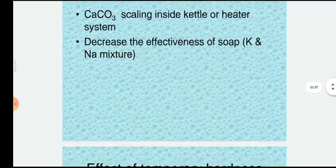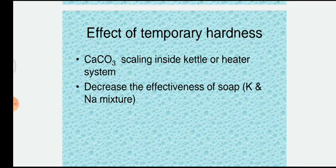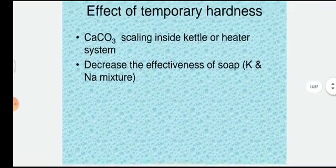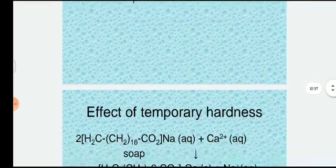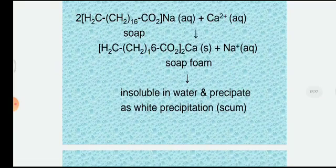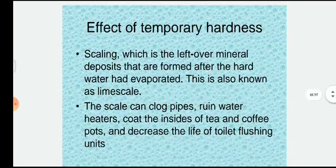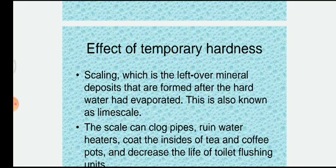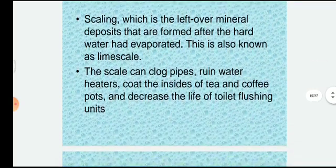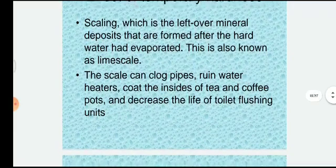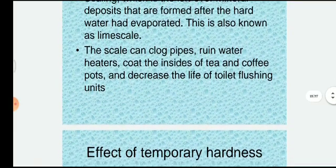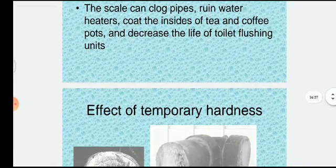Effects of temporary hardness include calcium carbonate scaling inside water heater systems, which decreases their effectiveness. Soap scum forms as an insoluble white precipitate. Scaling deposits left when hard water evaporates — known as limescale — can clog pipes, ruin water heaters, coat the inside of tea and coffee pots, and decrease the life of toilet and plumbing fixtures.